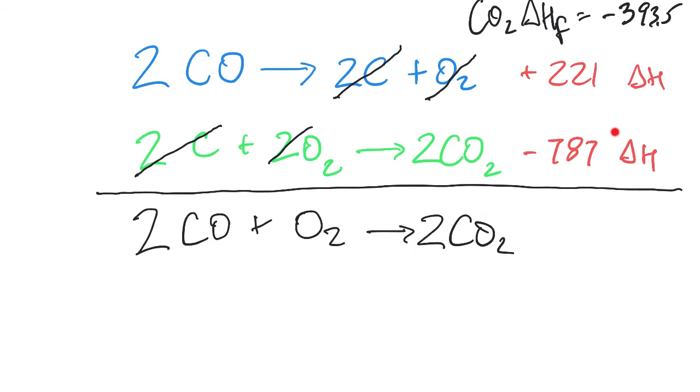Now get your calculator out because you're going to do this math problem here. So take positive 221, negative 787, add those, and that will be the delta H. Now that's not what you're going to write for your final answer, but we're almost there, right? You're going to take that answer, and because this is 2 moles of carbon dioxide, then the answer, the delta H, the enthalpy of formation, has to be divided by 2, and that will be the enthalpy of formation of carbon dioxide.